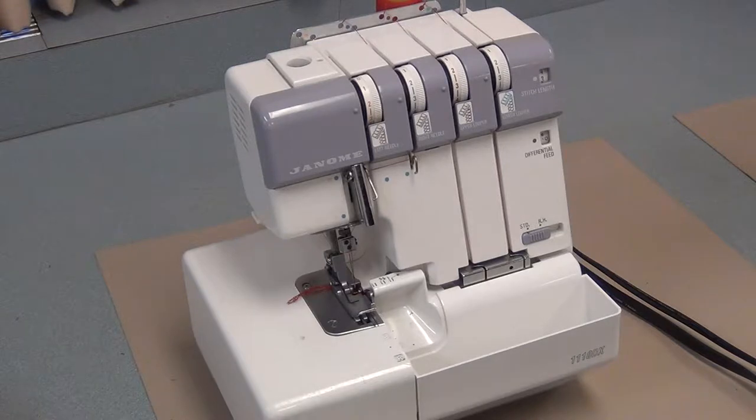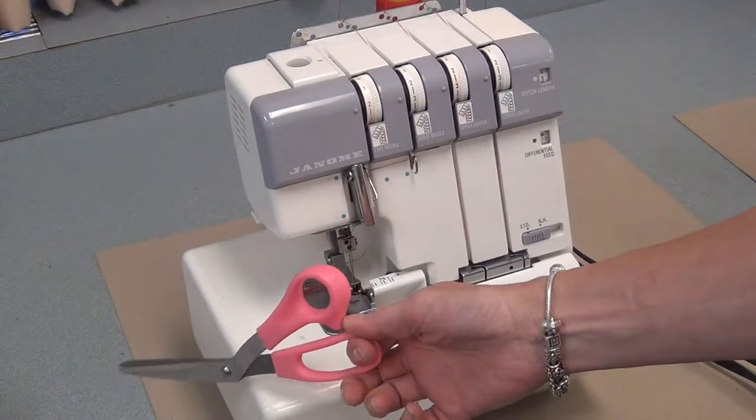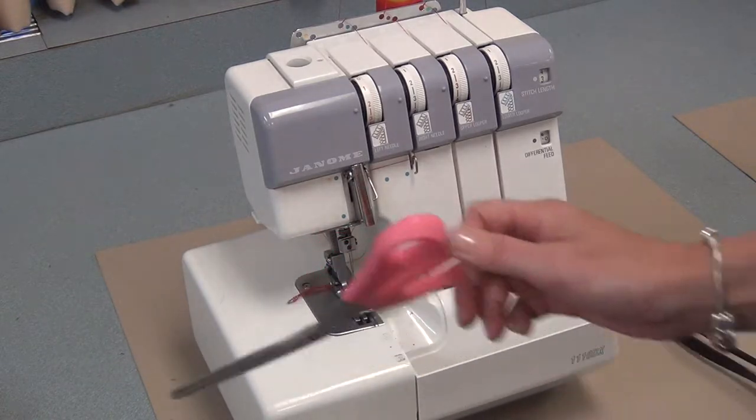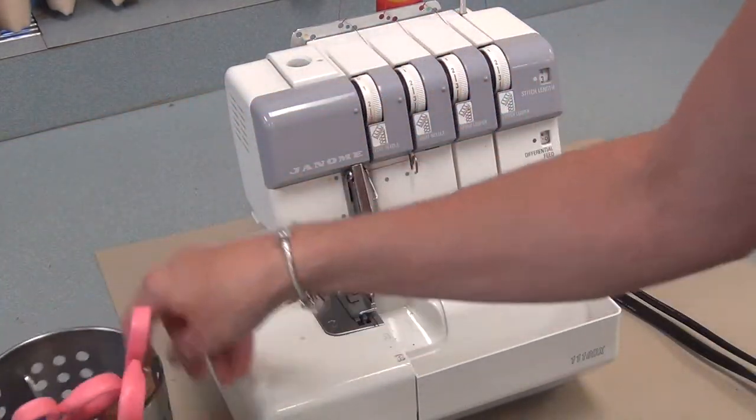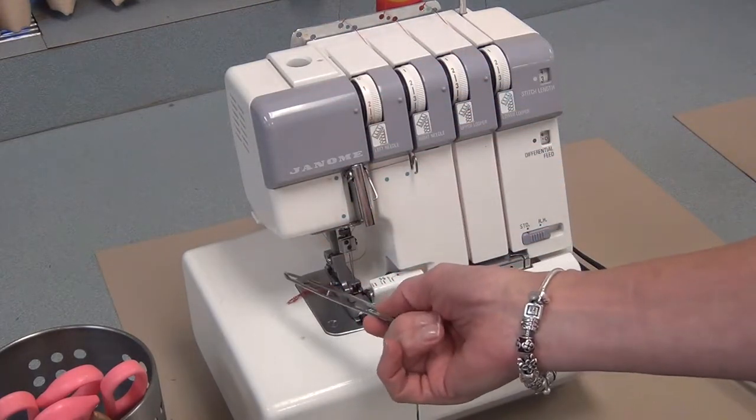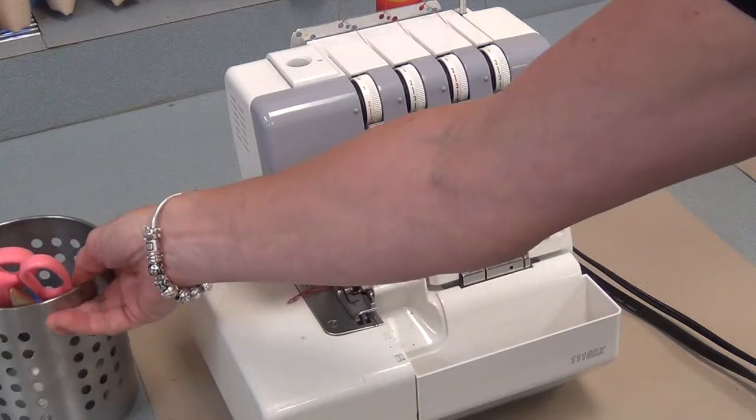The serger is used to finish the edges of fabric. It straightens it and makes it look good and protects it. You will also need to use scissors. We have these pink scissors in the can for cutting the tails after you serge. And sometimes you'll need to use the tweezers to get the tails out from underneath the foot. Make sure the pink scissors and the tweezers go back in the can when you're finished.